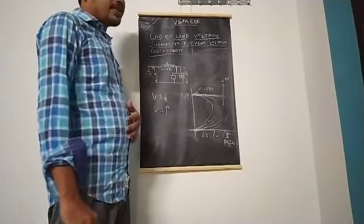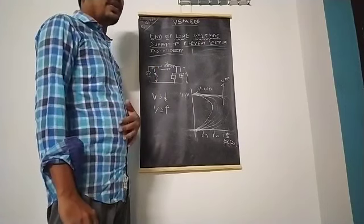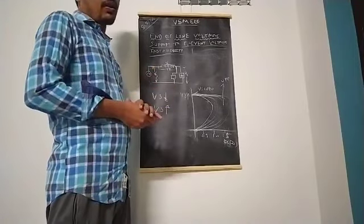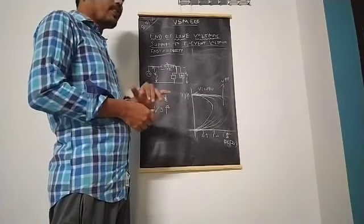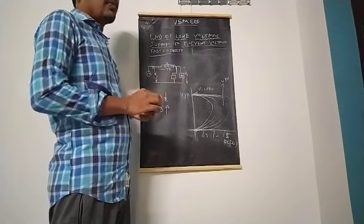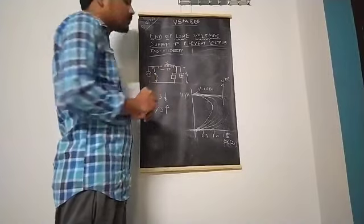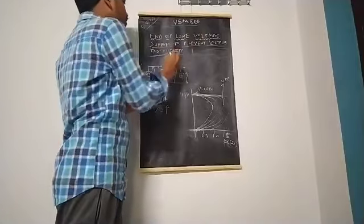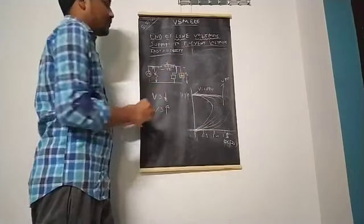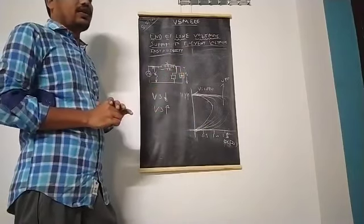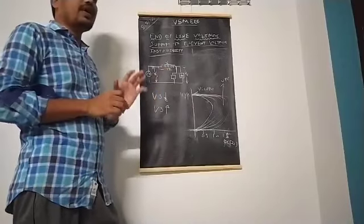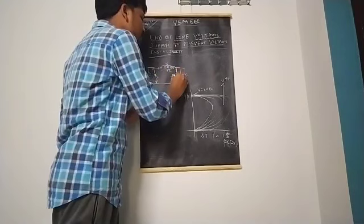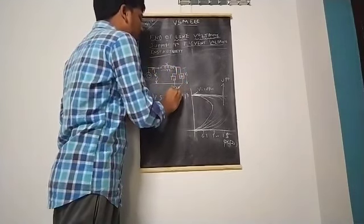Now, with the help of these compensation devices, how voltage stability can be achieved — that means voltage stability is achieved. To achieve voltage stability, that means to prevent voltage instability, we are inserting one voltage compensation device near to the VAR compensator. The end-of-line voltage support is very helpful in case of a radial system. In a radial system, the receiving end voltage is very low, and many disturbances occur at the receiving end side. That's why we connect a shunt compensation device near to the load.